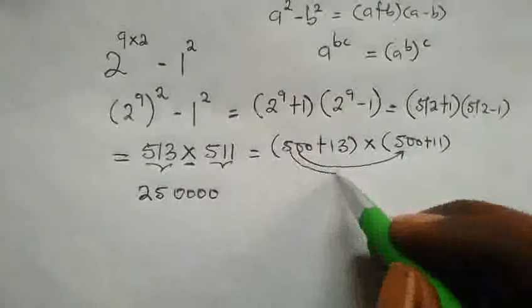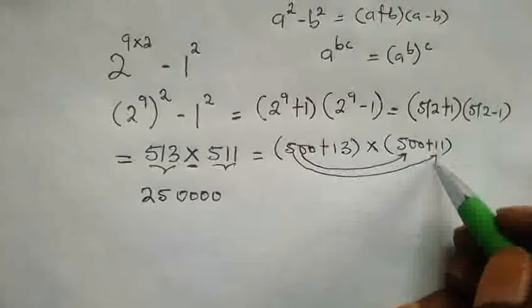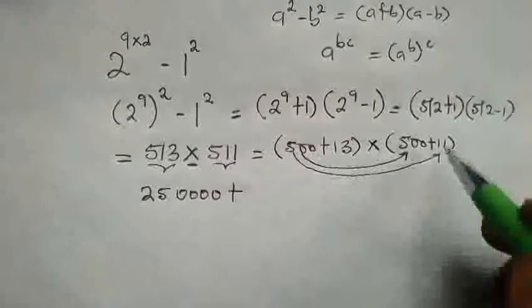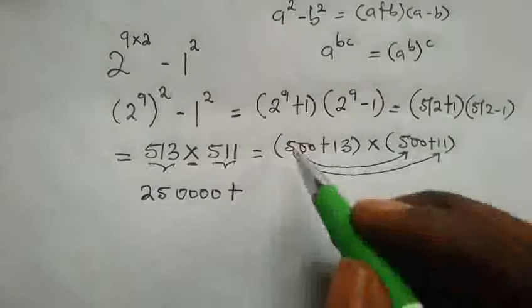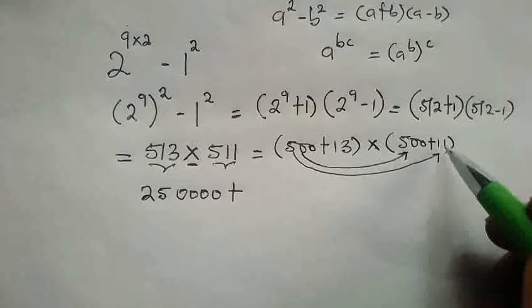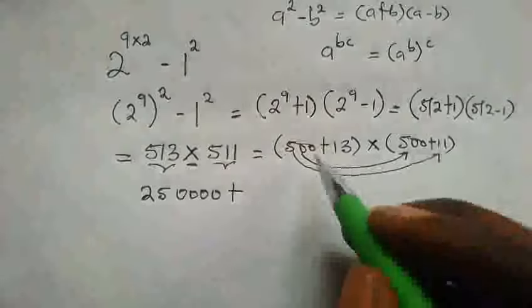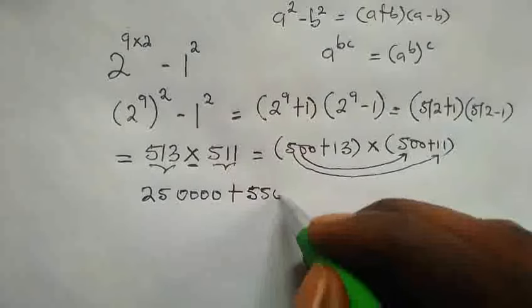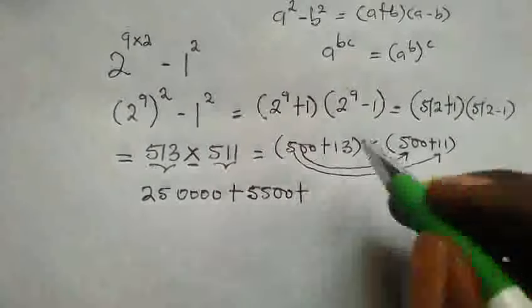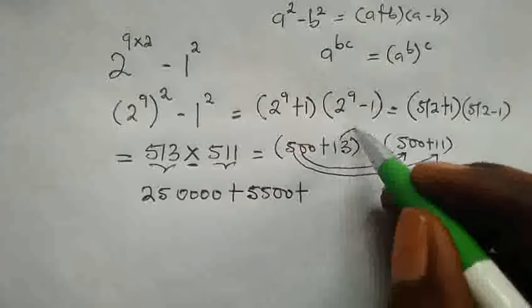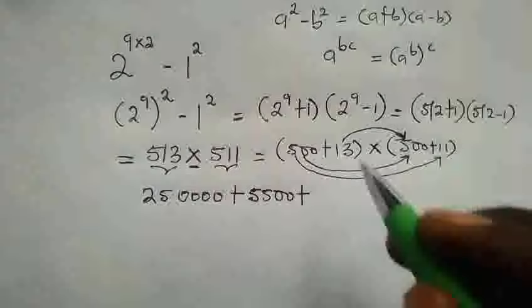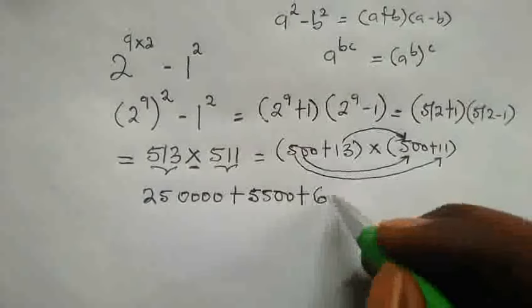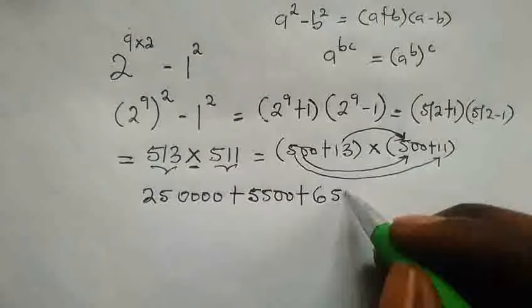Then 500 multiply the second number here, and that number happens to be positive. Now 500 times this 11, move the two zeros to 11, then multiply by 5, it will have 2 zeros. So 5 times 11 is 55 with 2 zeros. Then plus the next one is 13 times 500 over here. It will have 2 zeros, then 5 times 13 is 65, so we have 65 with 2 zeros.